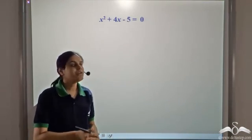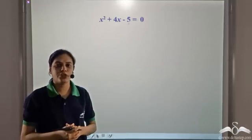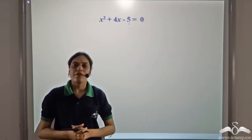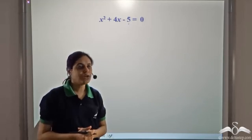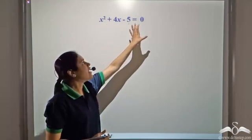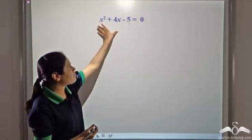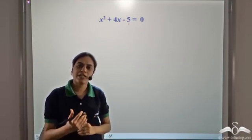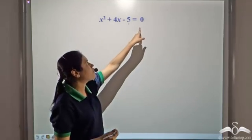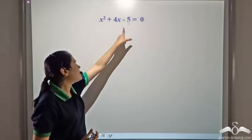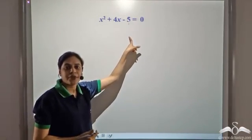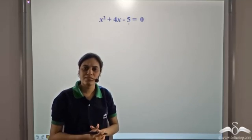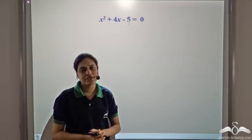We need to solve this quadratic equation x squared plus 4x minus 5 equal to zero. We have learned how to solve a quadratic equation by factoring, and also by taking the square root when we have a perfect square on the left hand side and a constant on the right. In this case the right hand side is zero but the left hand side is not a perfect square. So if we can make the left hand side a perfect square, we can solve by taking the square root of both sides.